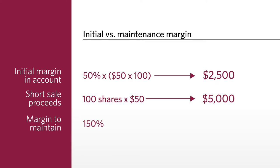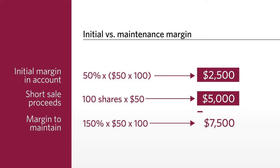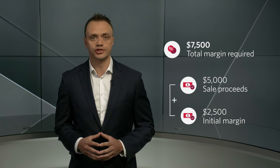Since this short sale requires margin of 150%, you must have 1.5 times the current value of the stock in your account to hold the short position. The short sale itself results in funds being deposited to your account, and you needed 50% of the trade value to initiate the trade. That's 150% times $50 times 100 equals $7,500. Initial margin in account is $2,500, and funds deposited when stock is sold is $5,000, for a total of $7,500. The total margin required is $7,500 — $5,000 generated from the sale plus an additional $2,500 of available margin already in your account.